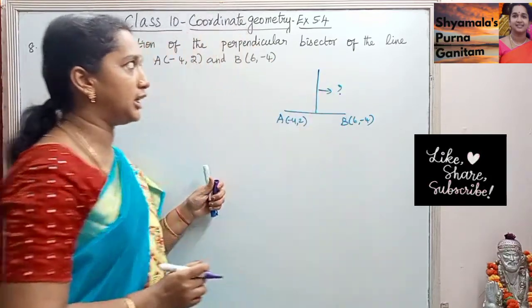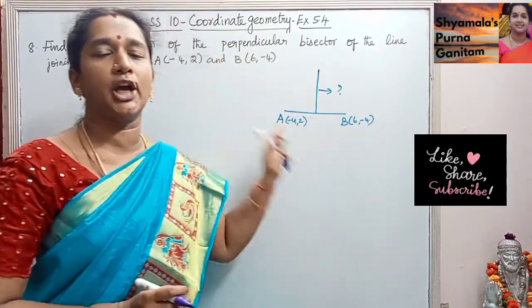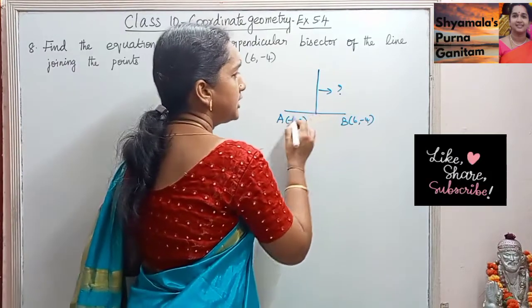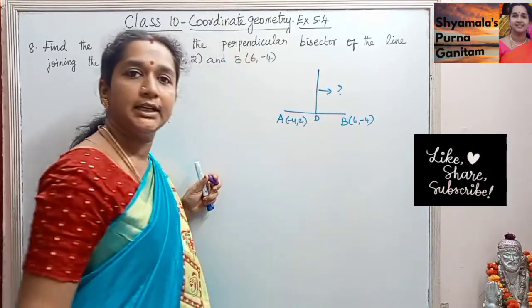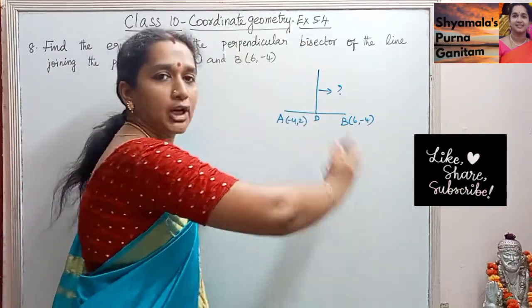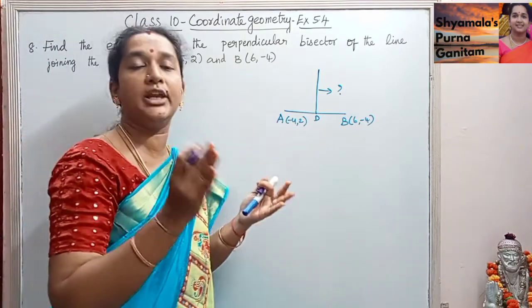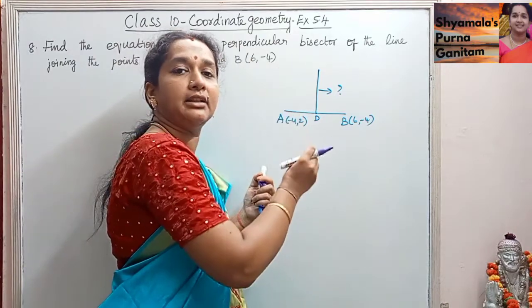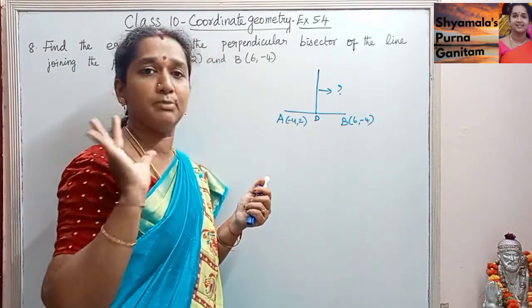We are asked to find the equation of the perpendicular bisector of the line joining the given points. We will take D as the midpoint here. Since there is a perpendicular bisector for a line segment, it will divide the line segment into two equal halves — that means it will be intersecting the line segment at one point. That point is the midpoint.